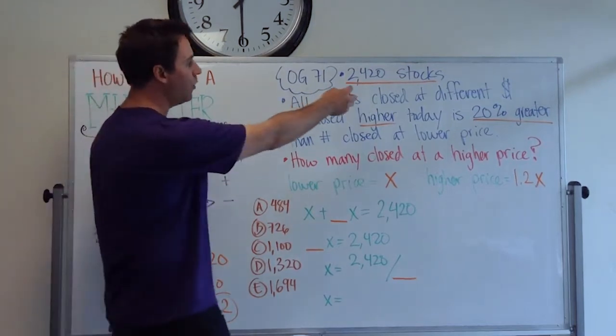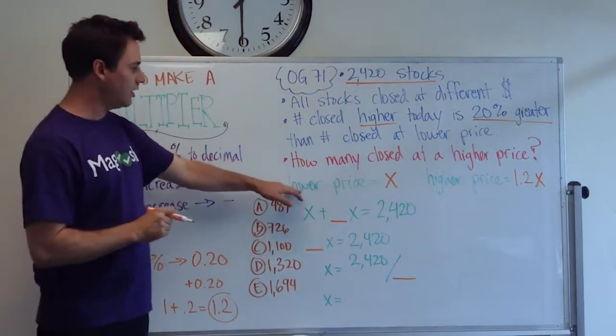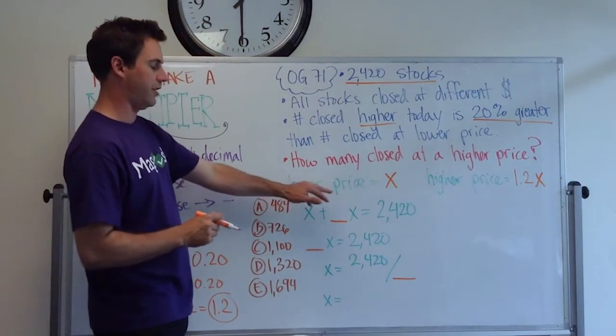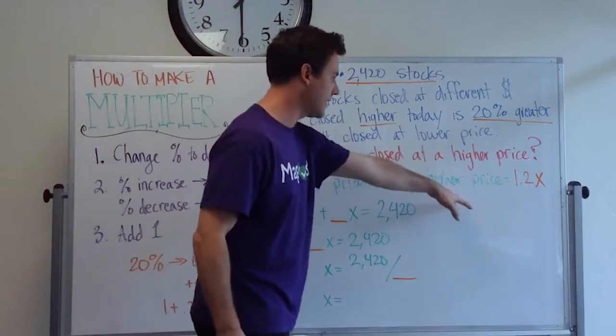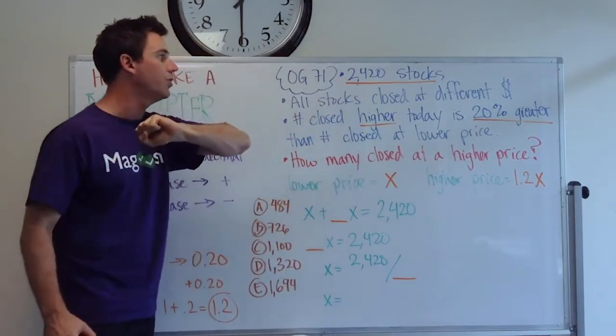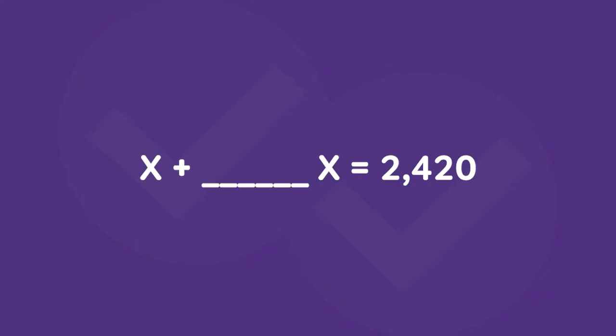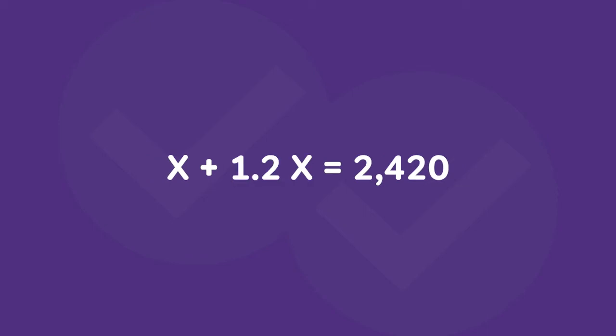So let's see how much easier it makes this problem. We know the total amount of stocks is 2,420. So we take the stocks that closed at a lower price and we take the stocks that closed at a higher price, we add them together, we know they're going to total 2,420. So that's what we do here, except now we have our multiplier. So X plus 1.2X.